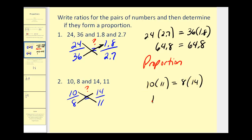So 10 times 11 must equal 8 times 14 if we have a proportion. 10 times 11 would be 110. 8 times 14 would be 80 plus 32 or 112. Well, these aren't equal. Therefore, these ratios do not form a proportion.